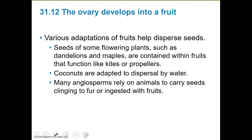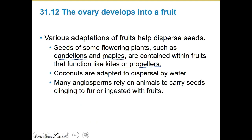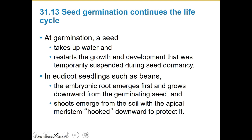Various adaptations of fruits help disperse seeds. Seeds of some flowering plants, such as dandelions and maples, are contained within fruits that act like kites or propellers — the maple fruit has little wings meant to catch wind. Coconuts are adapted for dispersal by water; that's why they float. Many angiosperms rely on animals to carry seeds clinging to their fur. The whole point of making a fruit delicious is that if we eat the fruit and it processes through, it can come out with a nutrient packet like fertilizer — manure — that helps improve conditions for that plant to germinate.